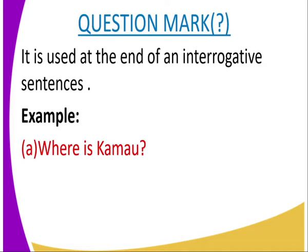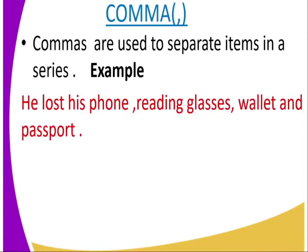The question mark is used at the end of an interrogative sentence. Interrogative sentences are those sentences that tend to ask questions, either direct or indirect. For example: 'Where is Kamau?' You place a question mark at the end of the sentence.